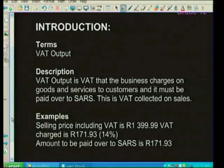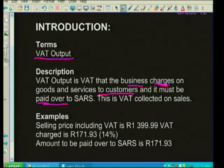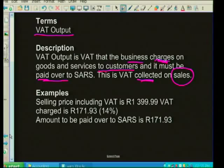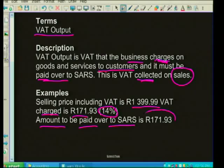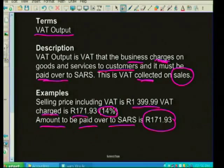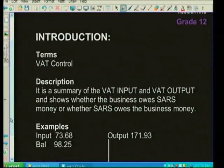VAT output is VAT that the business charges on goods and services to their customers, and it must be paid over to SARS — it is VAT collected on sales. For example: a selling price including VAT of 1,399 rand 99 cents carries VAT of 171 rand 93 cents, which is the amount to be paid over to SARS.